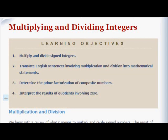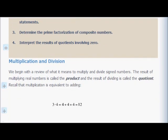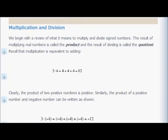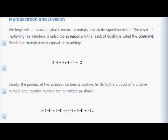Hi, my name is JJ Singh from Partook University, and we're continuing our discussion using the textbook Elementary Algebra by John Redden. With the third section of Chapter 1, we're going to learn how to multiply and divide signed integers, translate English sentences involving multiplication and division into mathematical statements, determine the prime factorization of composite numbers, and interpret the results of quotients involving zero.